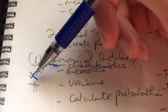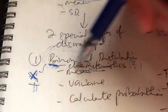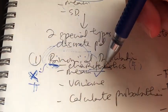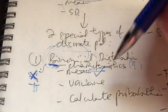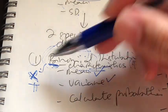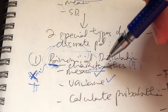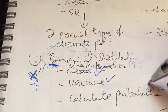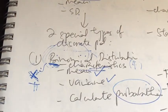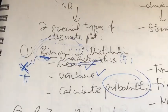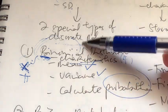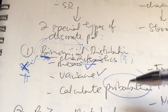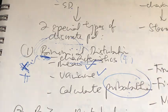Since our random variable follows the binomial distribution, we can find the mean, variance, and standard deviation. Besides those, we can also find the probabilities. Please remember the formula to calculate the binomial distribution, and also the second way to find probabilities by using the table.